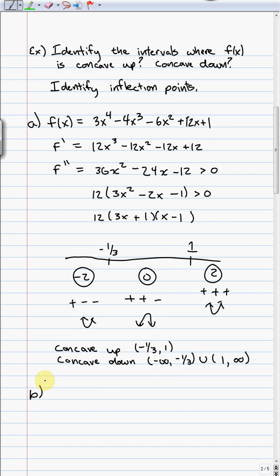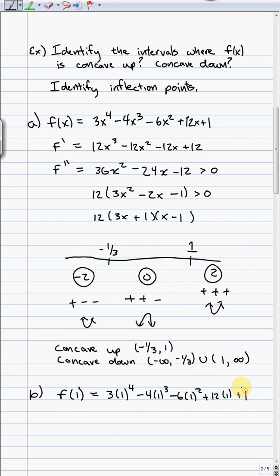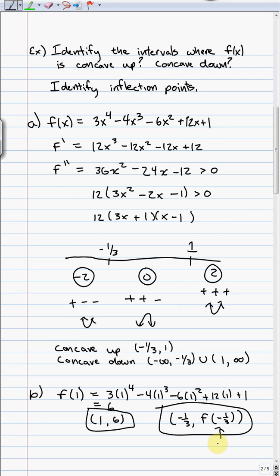For part B, inflection points are places where concavity changes, so they occur at x=negative one-third and x=1. These should be ordered pairs, so I plug back into the original function. At x=1: 3(1)⁴ minus 4(1)³ minus 6(1)² plus 12(1) plus 1 gives 3 minus 4 minus 6 plus 12 plus 1 = 6. So there's an inflection point at (1, 6). There's also an inflection point at (negative one-third, f(negative one-third)) — you should compute that arithmetic by plugging into the original function.